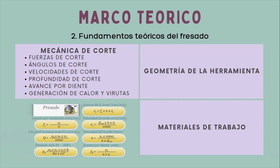Los tipos de herramientas son fresas de carburado y acero rápido, fresas de punta esférica, fresas de dedo, fresas de desbaste, fresas de ranurar, ángulo de desprendimiento, ángulo de inclinación, ángulo de flanco y número de dientes.